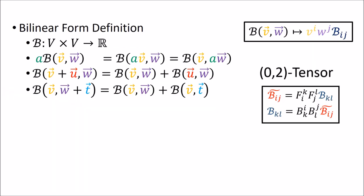To repeat everything once more: bilinear forms take two vector inputs and output a scalar, they follow these adding and scaling rules, we compute their output in a given basis using this formula, and their components use two covariant transformation rules when we change coordinates.